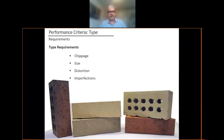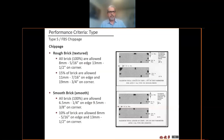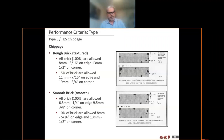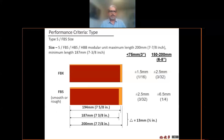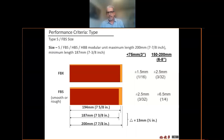Some of the other things addressed in the standard: chippage, size, and distortion. Depending on which type of brick is selected, there can be greater or lesser tolerances for chippage and other imperfections in the appearance of the brick. The same applies to tolerances in size — length, height, and depth are all defined. Type S will have a less stringent requirement, and type X will have the most stringent.